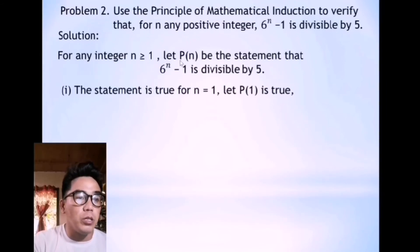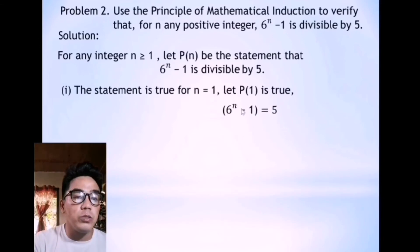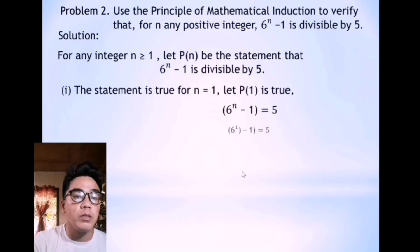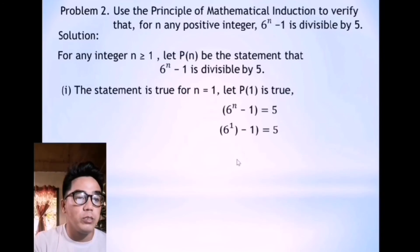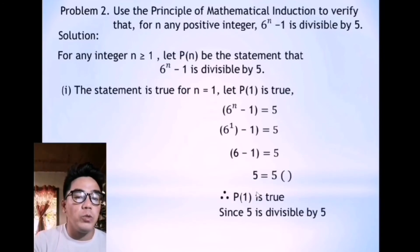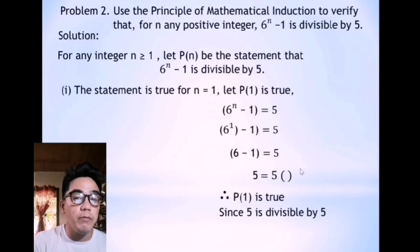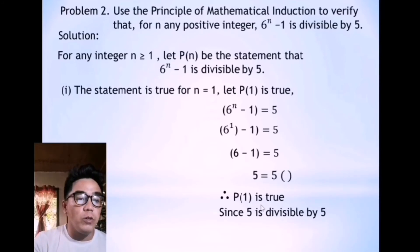We use the equation 6 to the power of n minus 1 and substitute n by 1. So 6 to the power of 1 is 6, minus 1 equals 5. Then 6 minus 1 is 5, which means 5 is divisible by 5 — that is, 5 times 1. So P of 1 is true.